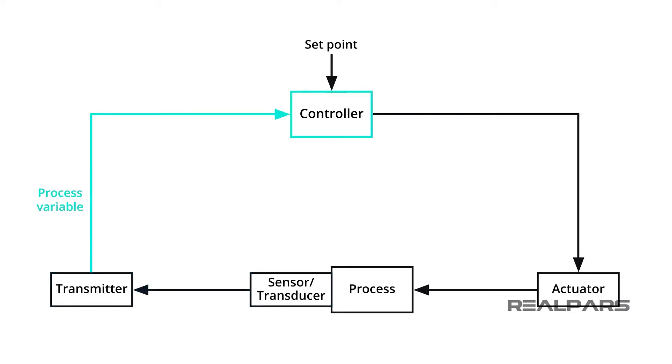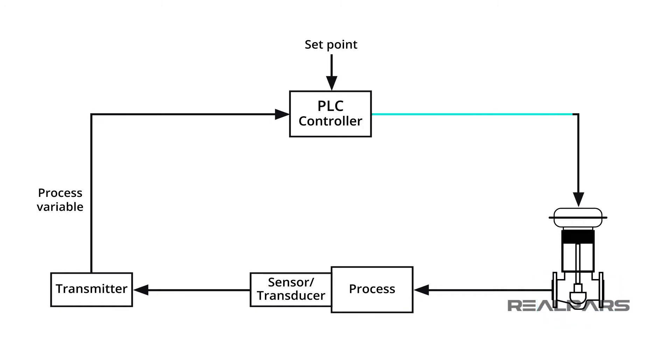The controller is the device that looks at the difference between the process variable or PV and the setpoint or SP. The controller then determines what action to take place and generates an output signal that is a function of the result of this comparison. Controllers are either a DCS or a PLC in process control today. The final actuator is the device such as a valve that exerts a direct influence on the process as directed by the controller.